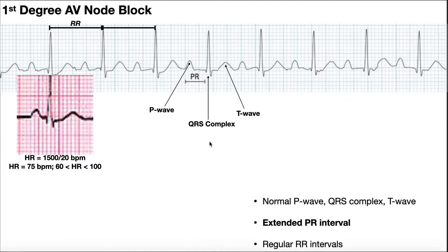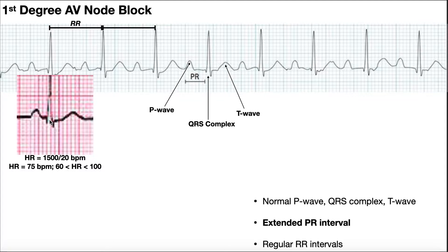How do you know if the PR interval is elongated? The general rule of thumb is that if the PR interval is five boxes or less, it's normal. We can count: one, two, three, four — so this PR interval is about four boxes, which is less than five. That's a normal PR interval.